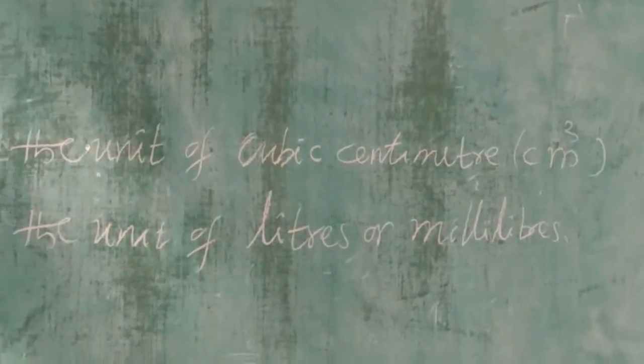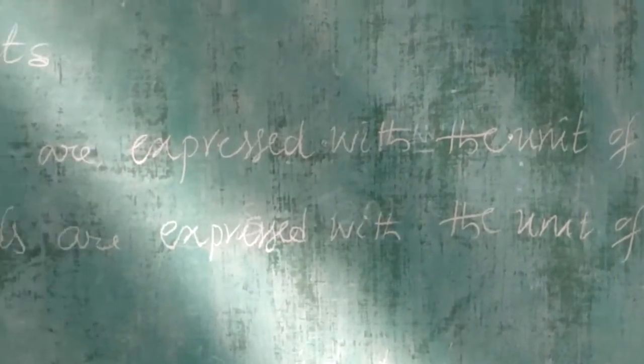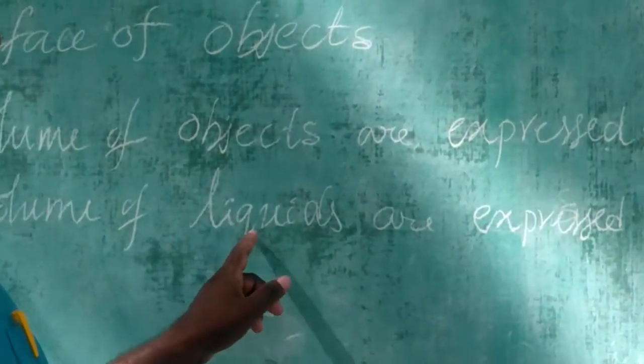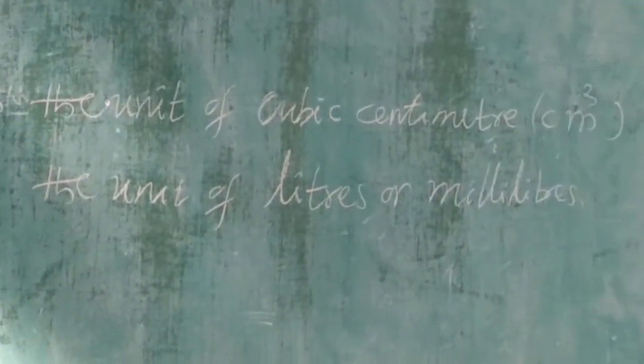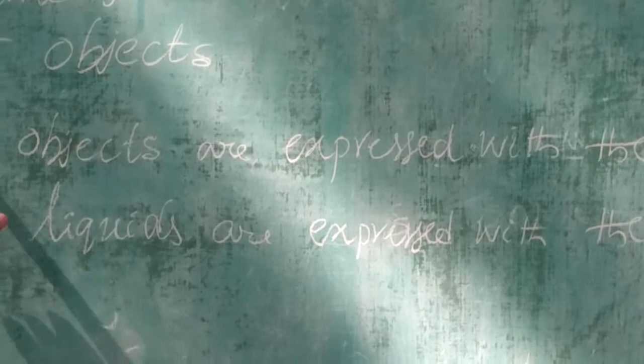The volume of liquids are measured in liters or milliliters. In case of objects, they are measured in cubic centimeters. What is the relation between cubic centimeters and milliliters?